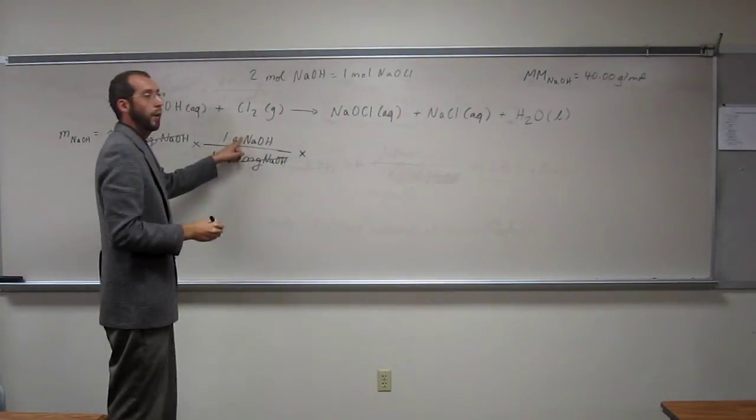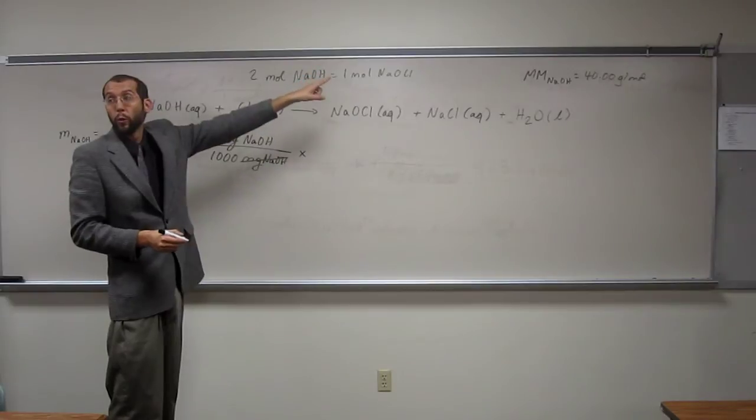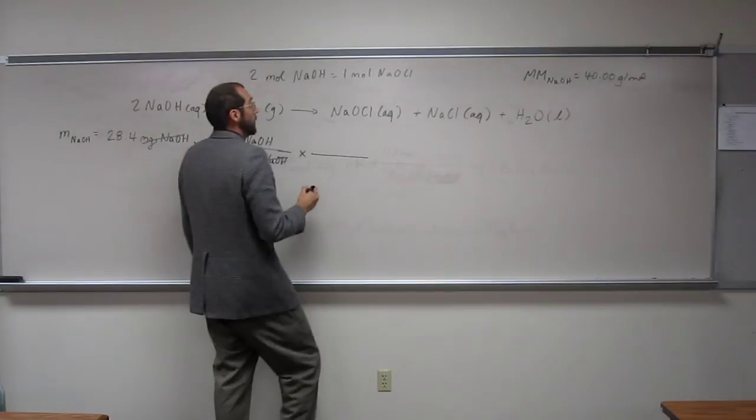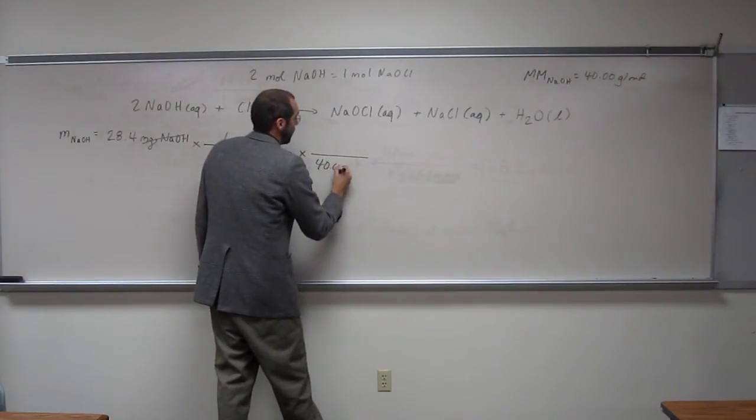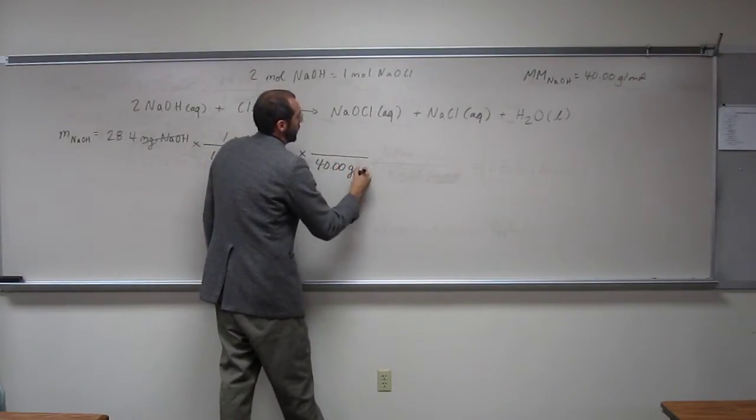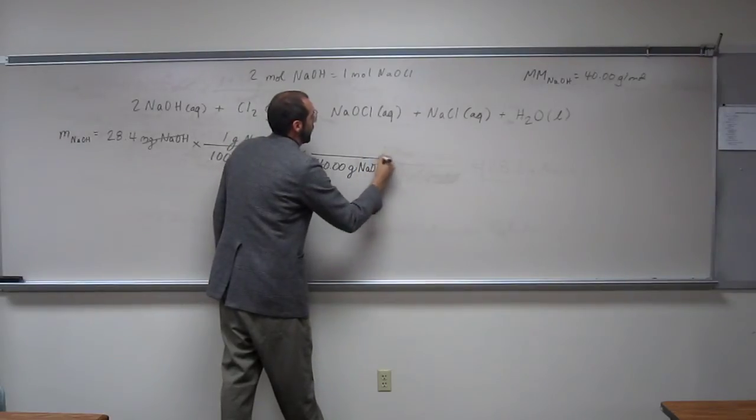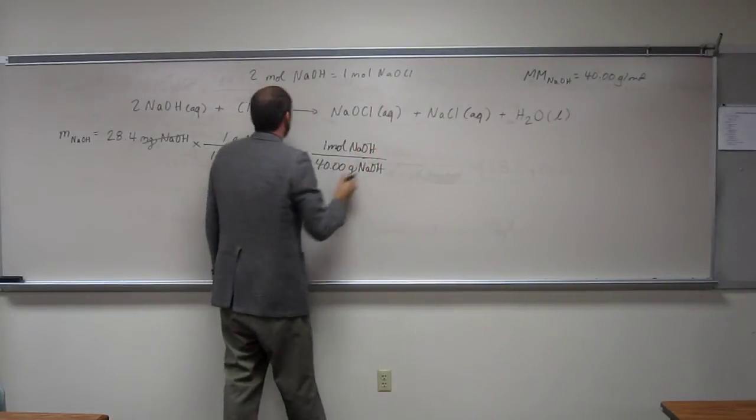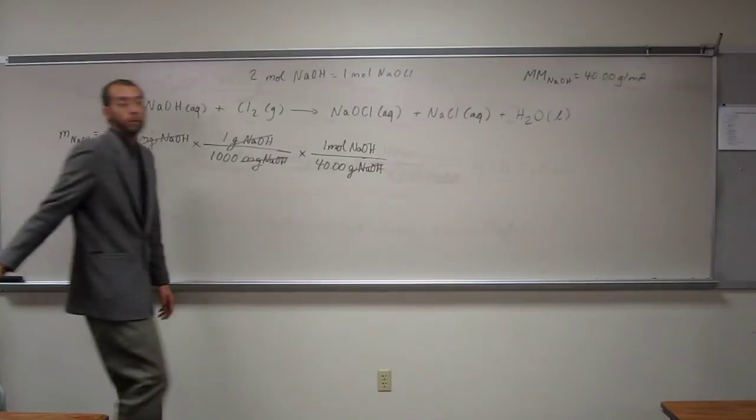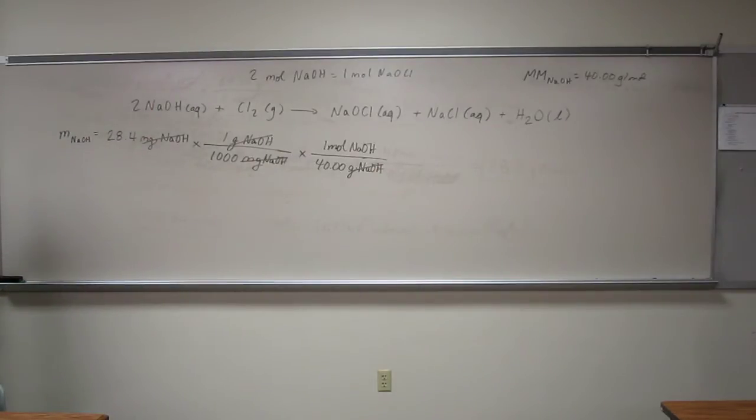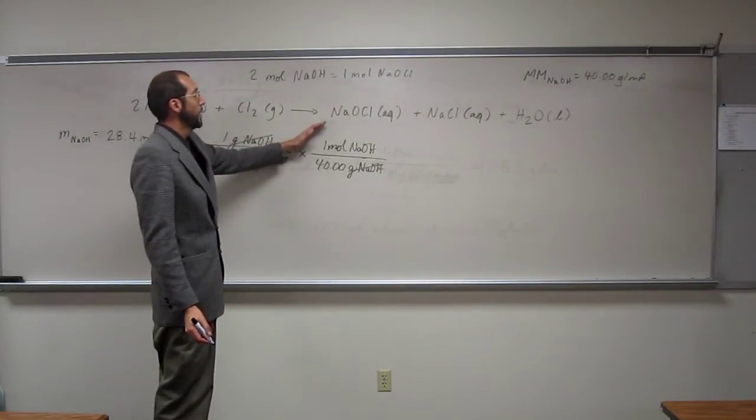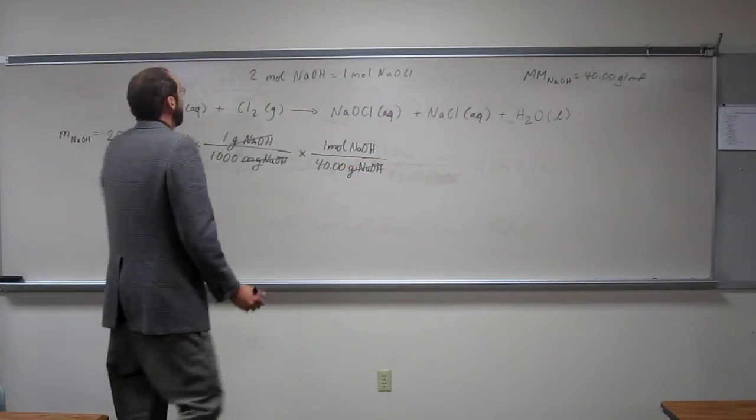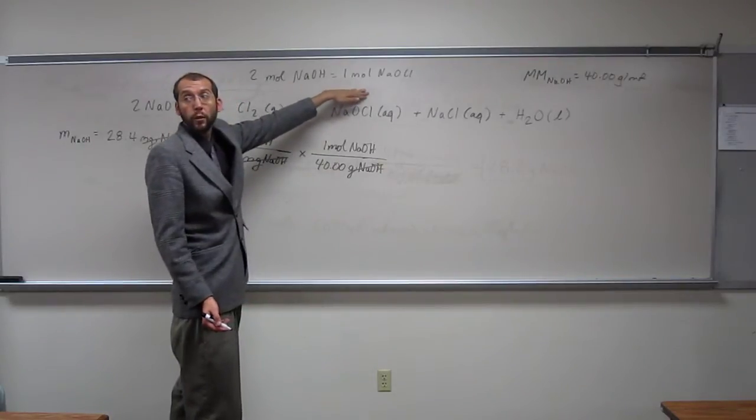Remember, we want to do moles because we need to use that mole-to-mole conversion, right? So we're going to have to use the molar mass of sodium hydroxide. So, on the bottom, 40.00 grams of sodium hydroxide. And on the top, one mole of sodium hydroxide. That's going to cancel out grams of sodium hydroxide right there. Now we have moles of sodium hydroxide, but we wanted grams of sodium hypochloride, right?